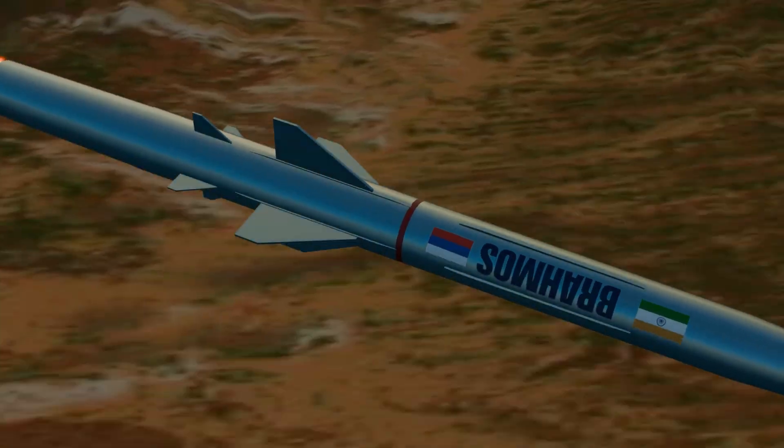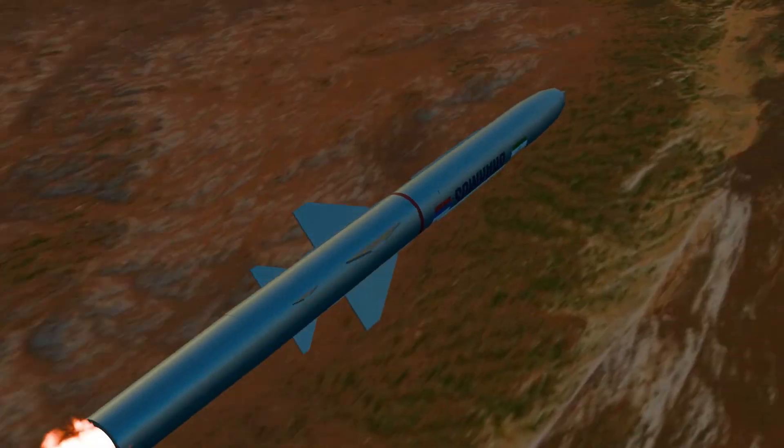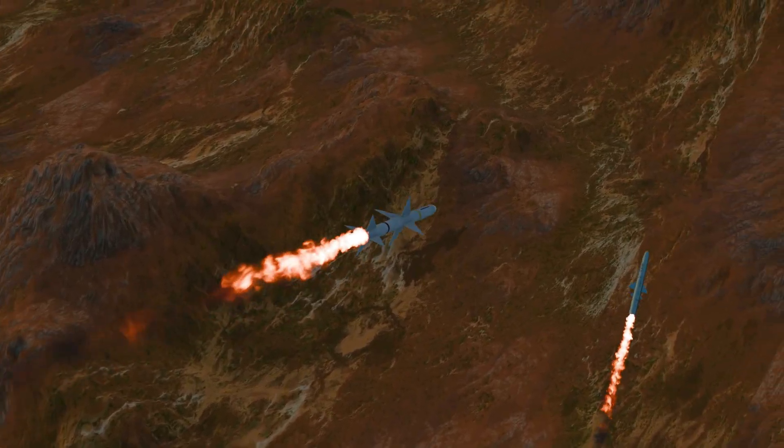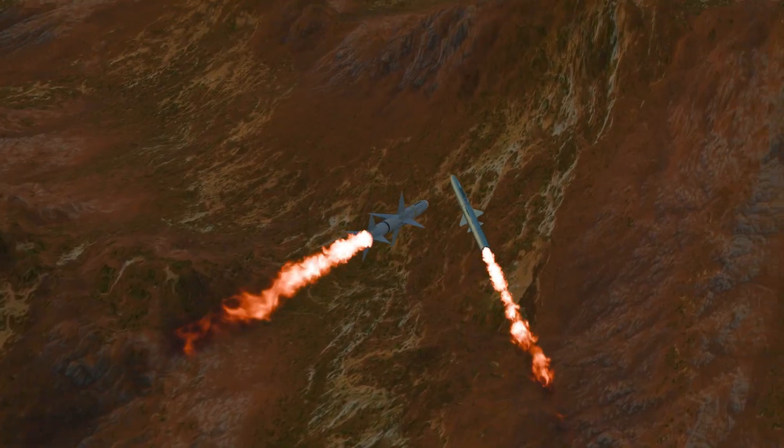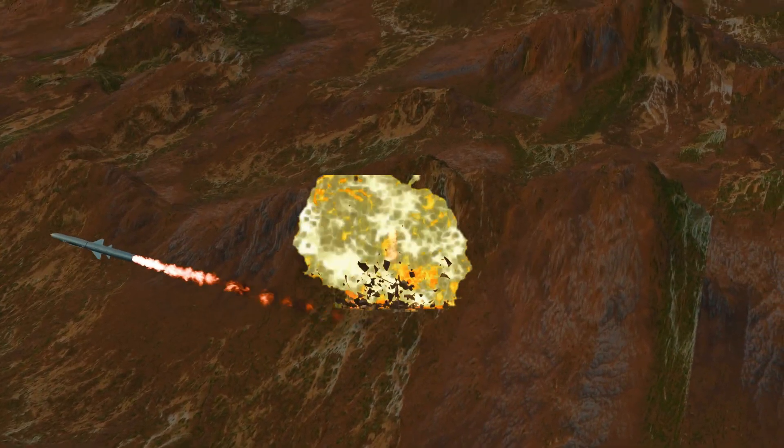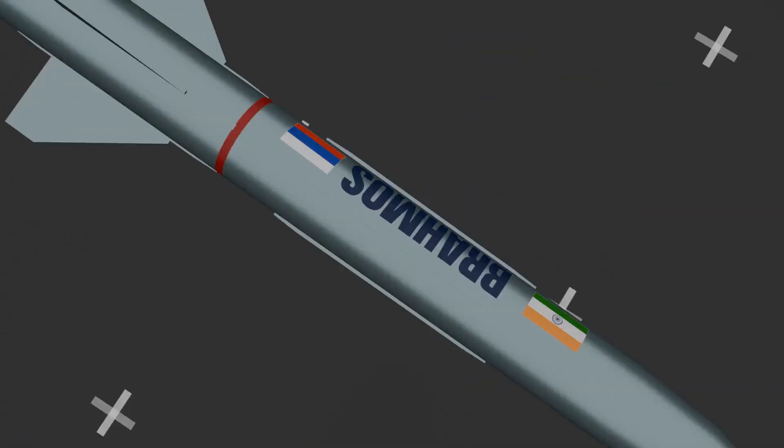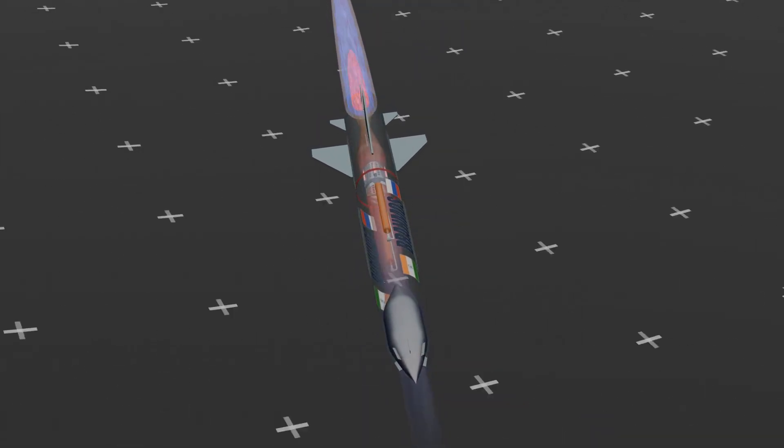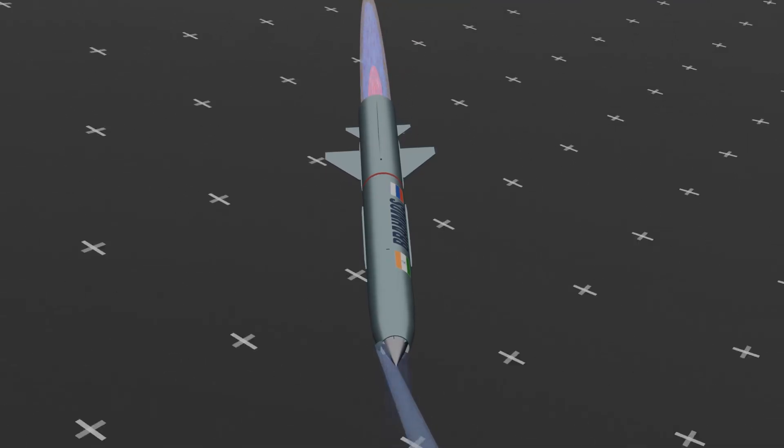Step 5: During its flight, if an interceptor missile approaches, Brahmos can alter its flight path to evade and confuse the interceptor. Step 6: Equipped with an Inertial Navigation System or INS and GPS, the missile continuously adjusts its trajectory.